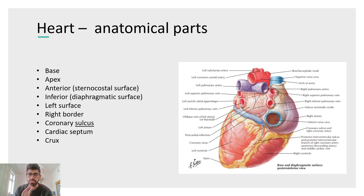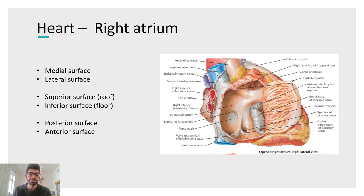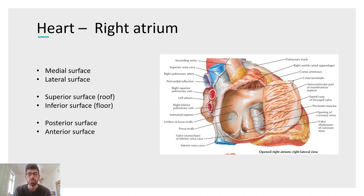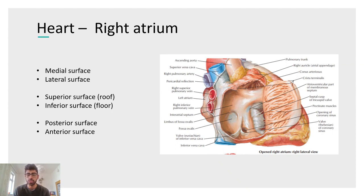The right atrium is a hot exam topic. It can be modelled like a cube with six sides: medial, lateral, superior, inferior, posterior, and anterior surfaces. The dissection is made along the sulcus terminalis — a groove on the outside of the right atrium — which corresponds to an internal structure called the crista terminalis, visible inside the chamber.